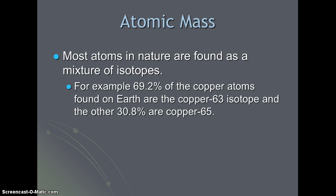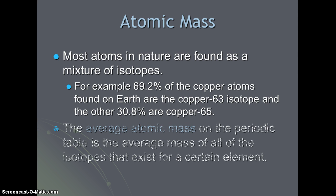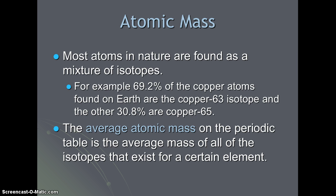Most atoms in nature are found as a mixture of isotopes, so there's not just one type of atom for an element. For example, about 69 percent of the copper atoms found on Earth are copper-63, and the other 31 percent are copper-65. The average atomic mass, which is listed on the periodic table, is an average mass of all of the isotopes that exist for a certain element.